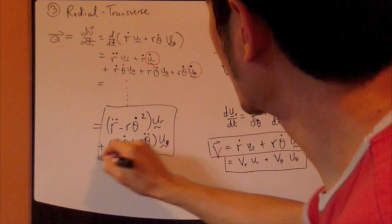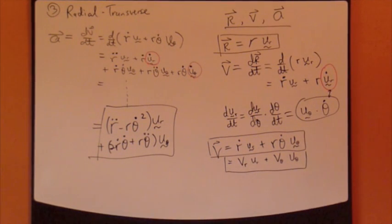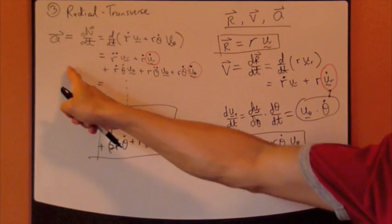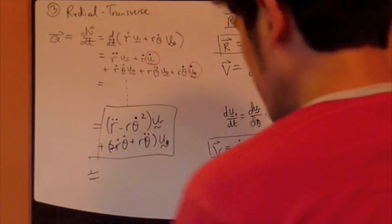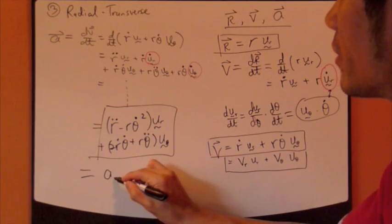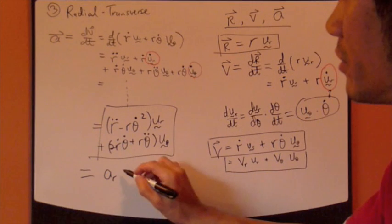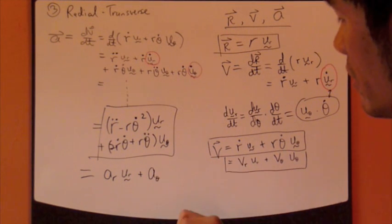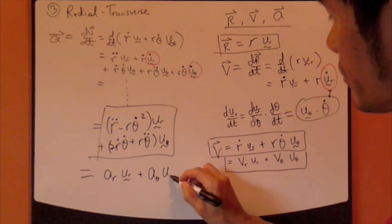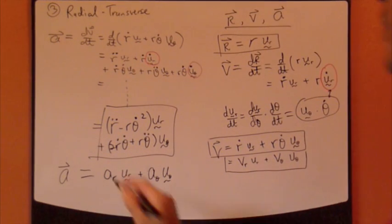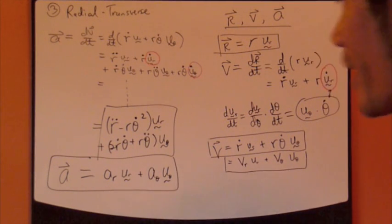That's it. So this is the result for acceleration vector. So there you have it. You have position, you have velocity, and you have acceleration. Now this is exactly the first term right here, is simply the radial component of acceleration. But the second term, the whole thing here, is the theta direction of acceleration vector. Now let's look at an example.